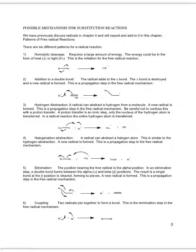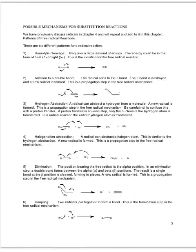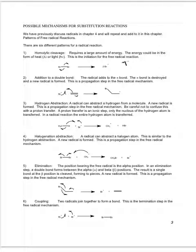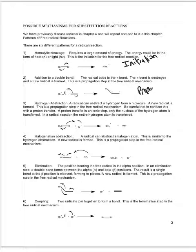The first part of chapter 6 deals with free radicals. Here we have the six basic steps of any free radical mechanism. You will notice that in the first one, the homolytic cleavage or initiation, there are only two arrows needed because we only have two electrons moving in the bond that's breaking between our initiators.